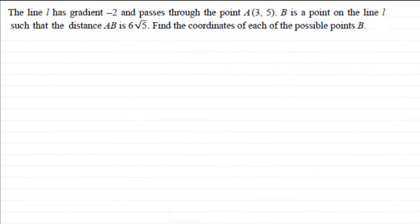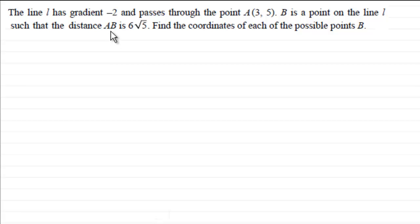This is a nice question on coordinate geometry. We've got the line L, which has a gradient of minus two, and passes through the point A with coordinates (3, 5). We're told that B is a point on the line L such that the distance AB is 6 root 5, and what we've got to do is find the coordinates of each of the possible points of B.